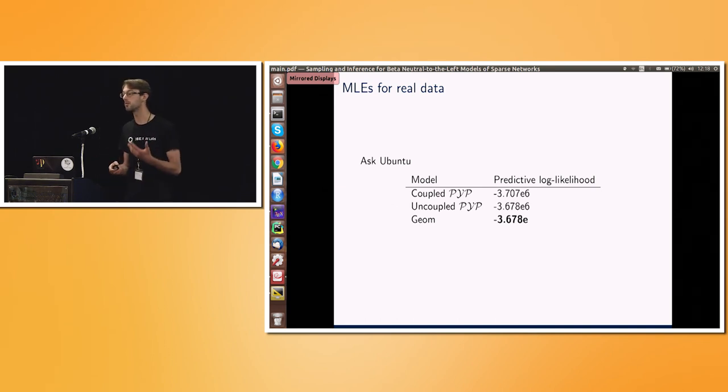And that does make sense, if you remember, that had this strong linear sparsity, and these models just aren't able to capture linear sparsity. Whereas, when we suggested some non-exchangeable beta-neutral to the left, based on a geometric distribution for the arrival times, well, then we found that we got better results.